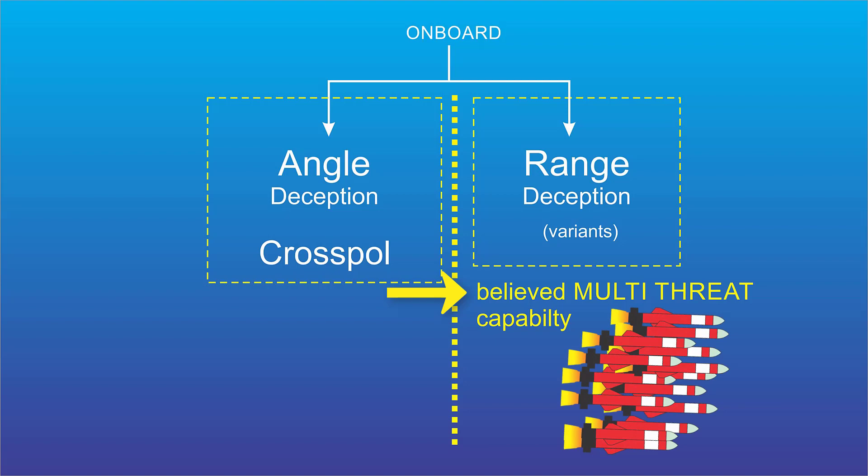It's easy to imagine a single jammer with signal processing that can deny range information to multiple missiles all at the same time. So it's easy to get a mental picture of that and believe that it's possible.